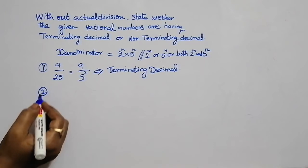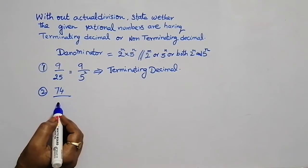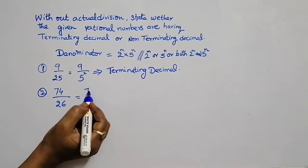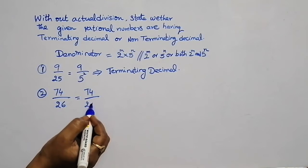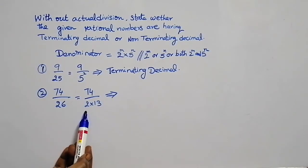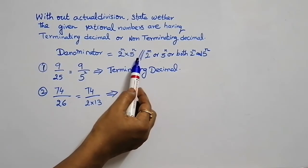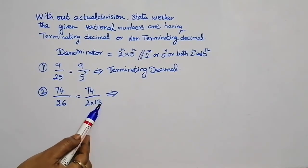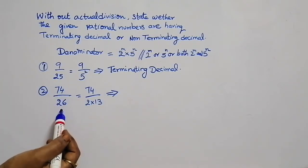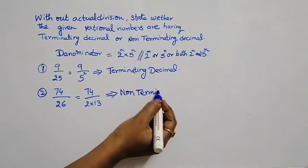Next example: 74 by 26. The prime factorization of 26 is 2 into 13. In the denominator we have 2, but along with 2 we also have 13. Our condition requires only 2 and 5 — no other number should be there. Since 13 is present, the decimal representation for this rational number is non-terminating recurring decimal.